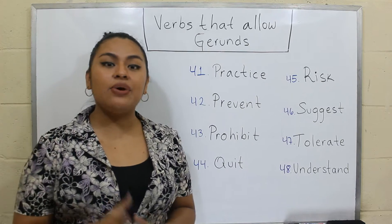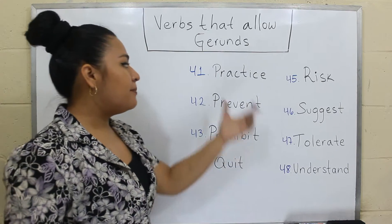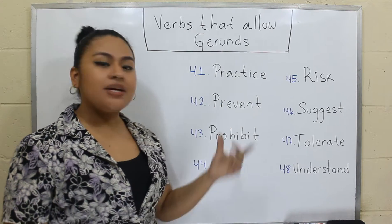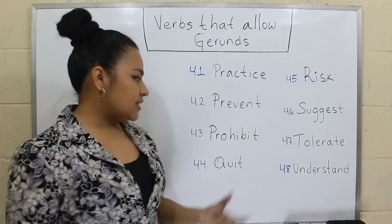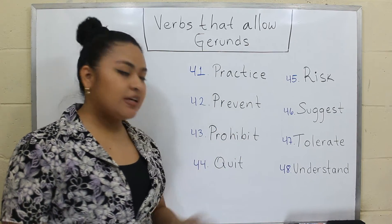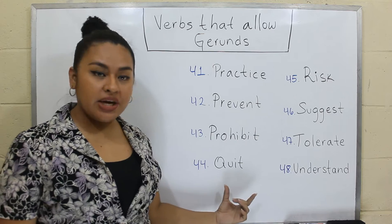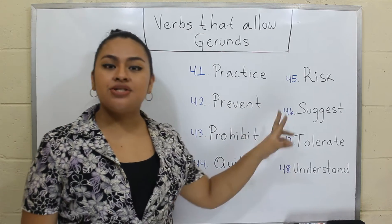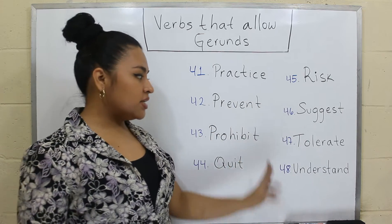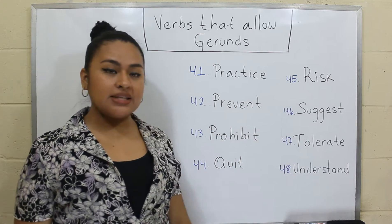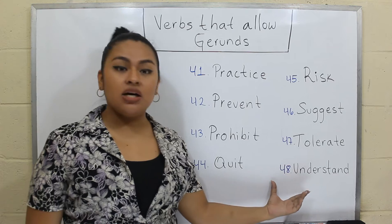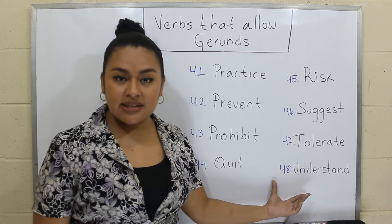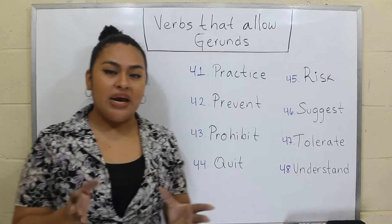And finally we have: practice, prevent, prohibit, quit, risk, suggest, tolerate, and understand. So right now, let's see some examples of these verbs followed by gerunds.